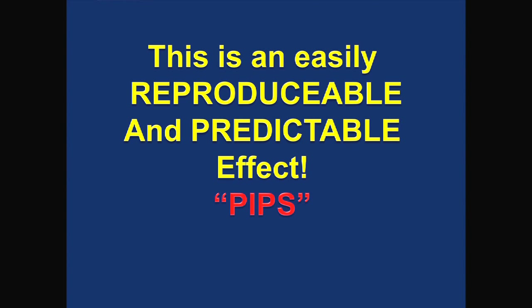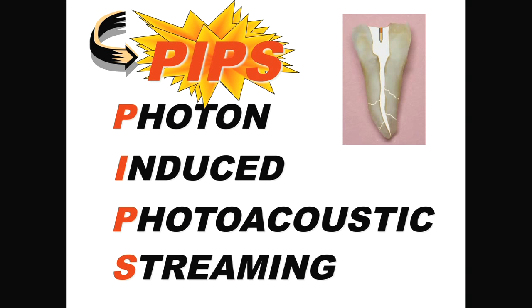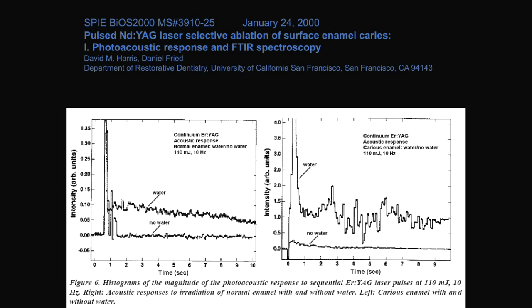It's a real, easily reproducible and predictable effect, and we've turned to PIPS — Photon-Induced Photoacoustic Streaming. There have been studies on this back in 2000, including studies on Nd:YAG and photoacoustics, and a comparison of the Continuum Urbium YAG showing photoacoustics with water versus no water. This phenomenon has been studied; it just hasn't been brought to the forefront or utilized for what we've actually found great use for it.